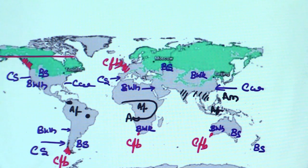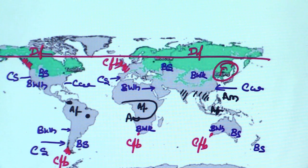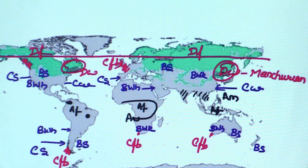The taiga belt is DF climate in the subpolar area, while DW is found in Manchurian and Labrador type regions.